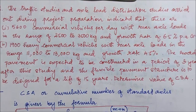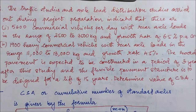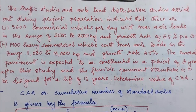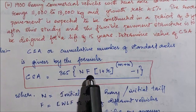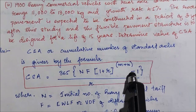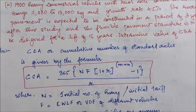CSA, or the cumulative standard axles, is the effect of the load repetitions of each vehicle class during the desired design period of N number of years. It is represented by the formula: CSA equals 365 into N, F, into (1 + r)^(m+n).